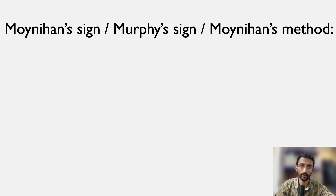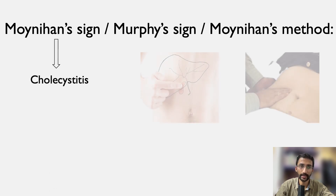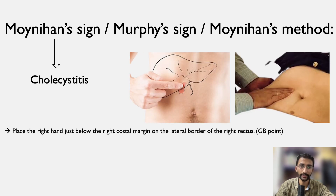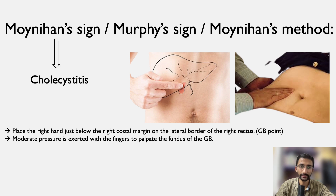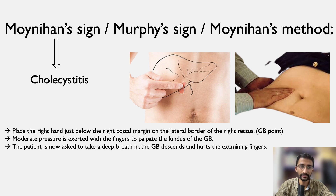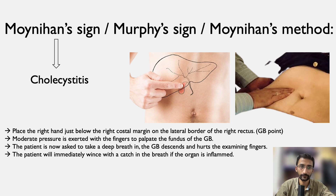Murphy's sign, also called Moynahan's method, is done in case of cholecystitis. The right hand is placed just below the right costal margin on the lateral border of the right rectus, which is the gallbladder point. Moderate pressure is exerted with the fingers to palpate the fundus of the gallbladder. The patient is asked to take a deep breath; the gallbladder descends and hurts the examining fingers. The patient will immediately wince with a catch in the breath if the organ is inflamed.